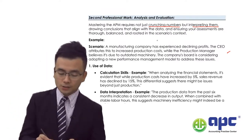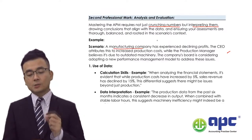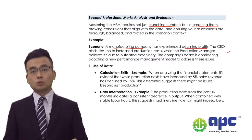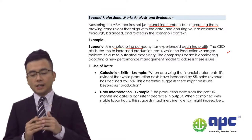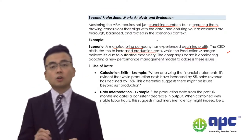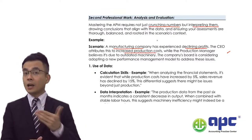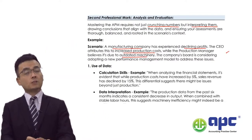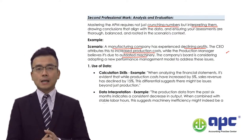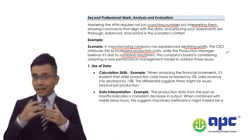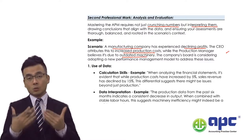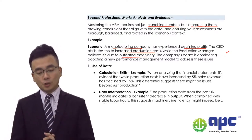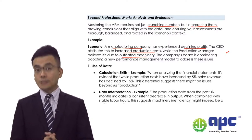The scenario is a manufacturing company where raw material costs are important but it has experienced declining profit. Manufacturing companies may face a lot of competition in the marketplace. The CEO says this may be due to an increase in production costs — possibly labour costs or overhead expenses. The production manager believes it's due to outdated machinery, leading to idle time, machine breakdown, unexpected inefficiency costs such as waste, and contributing to increasing costs. The company's board is considering adopting a new performance management model to deal with these issues.